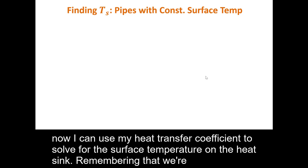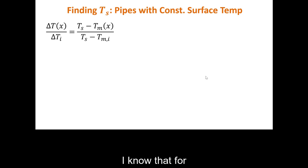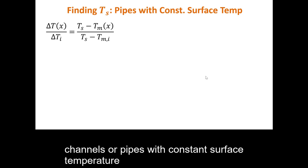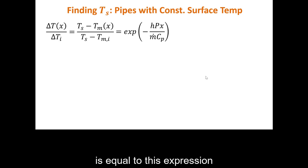Now, I can use my heat transfer coefficient to solve for the surface temperature on the heat sink, remembering that we're assuming that that temperature is uniform everywhere on the heat sink. I know that for channels or pipes with constant surface temperature, I can use this dimensionless temperature difference is equal to this expression.